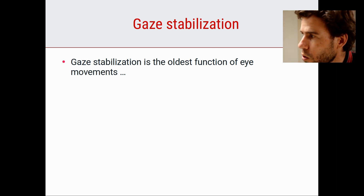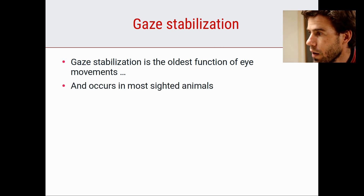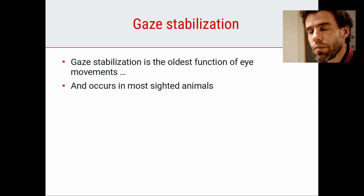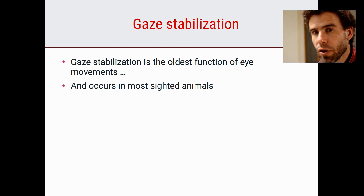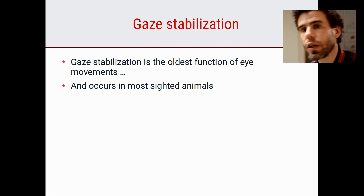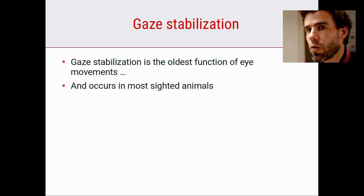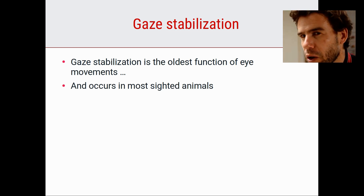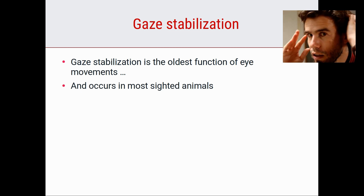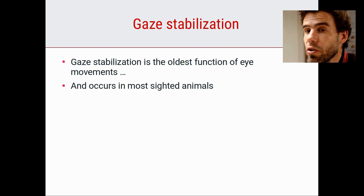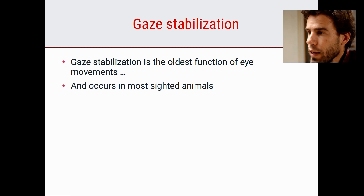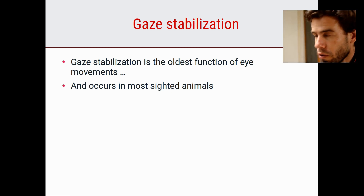Gaze stabilization is the oldest function of eye movements and occurs in most sighted animals - even fish show optokinetic nystagmus and vestibular ocular reflex. Most fish don't show vergence since their eyes look in different directions. Insects show gaze stabilization reflexes. In a sense, this is why eye movements evolved: to keep the retinal image stable.